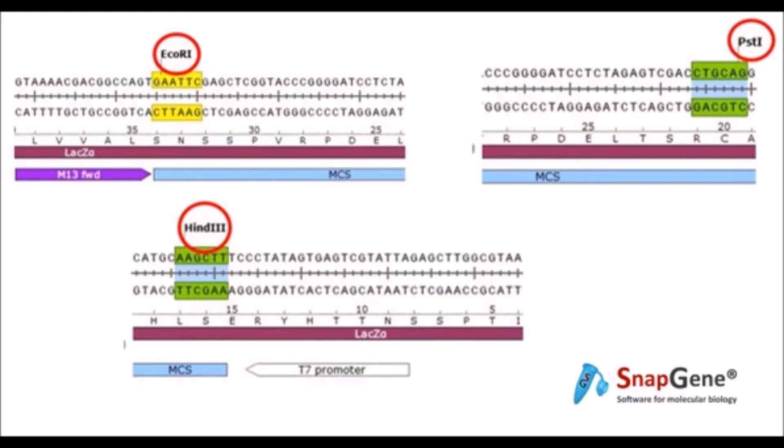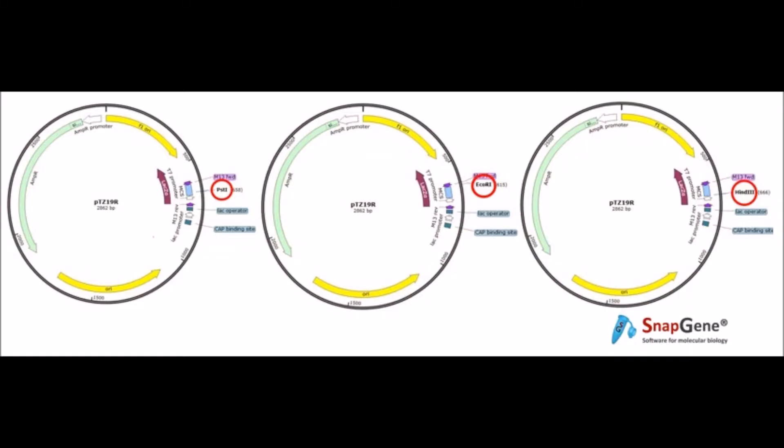EcoRI was isolated from Escherichia coli, which cleaves within the DNA sequence GAATTC, while PstI was isolated from the gram-negative bacterium Providencia stuartii that cleaves at the CTGCAG sequence. Finally, HindIII was isolated from Haemophilus influenzae and cleaves in AAGCTT palindromic sequence within the DNA. The pTZ19R has just one restriction site for the PstI, EcoRI, and HindIII enzymes.